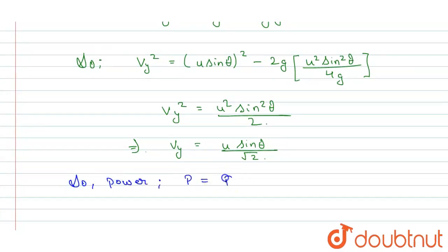We know that the power is the dot product of force and velocity. Okay, so it will be equal to—